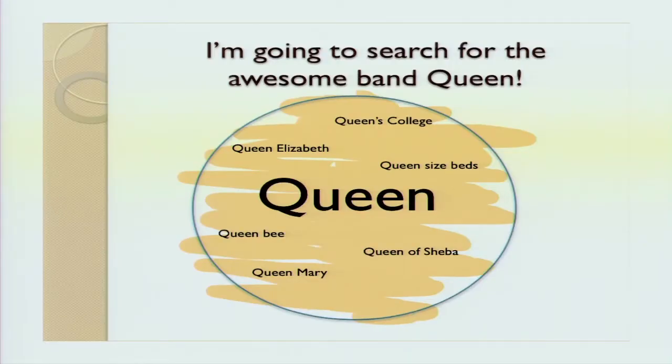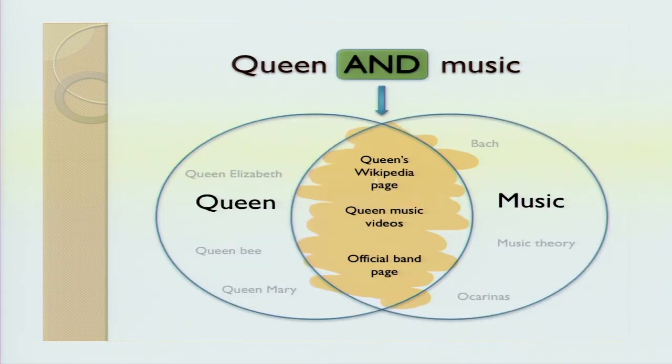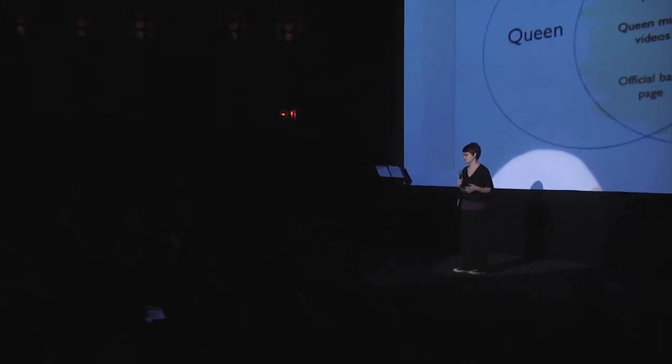Well, what can you do? You can use the Boolean operator AND. You can put in Queen AND music. This will cut out all of the pages that just mention Queen or just mention music, and only return pages that mention both, such as the band's Wikipedia page, their music videos, etc. Now, in databases, you have to write out the word AND. But if you're using Google, the AND is implied — you don't actually have to type it out.